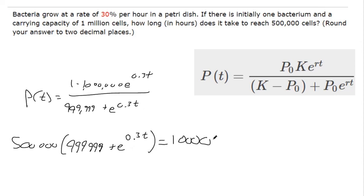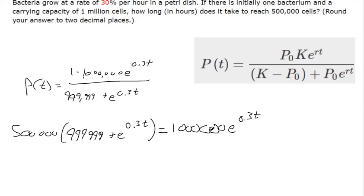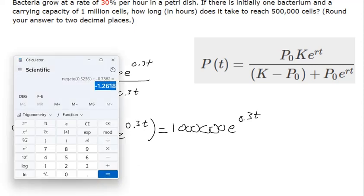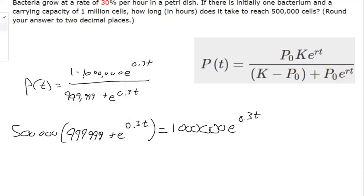There's our million. And so we want to collect the t terms together, because t is the variable we're trying to solve for. So I can distribute this 500,000. I've got to start typing the numbers here. This is going to take too long.